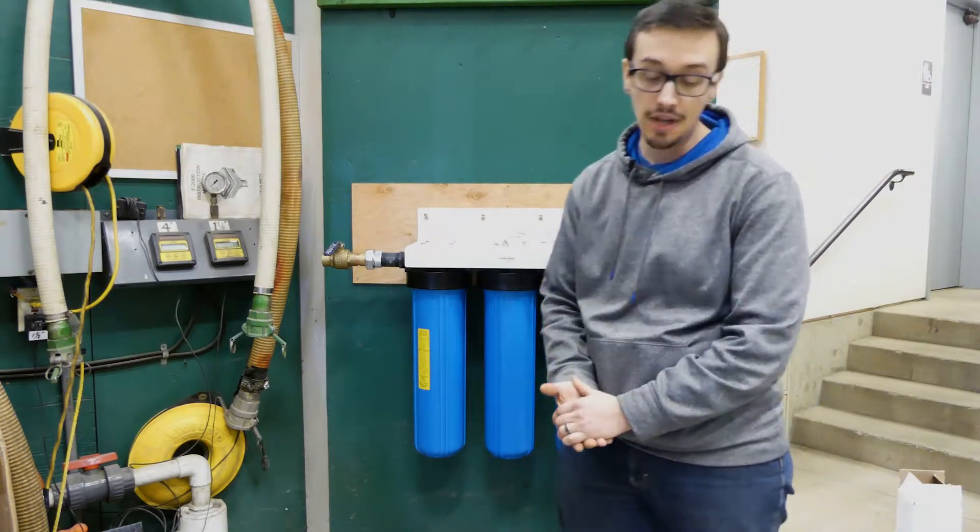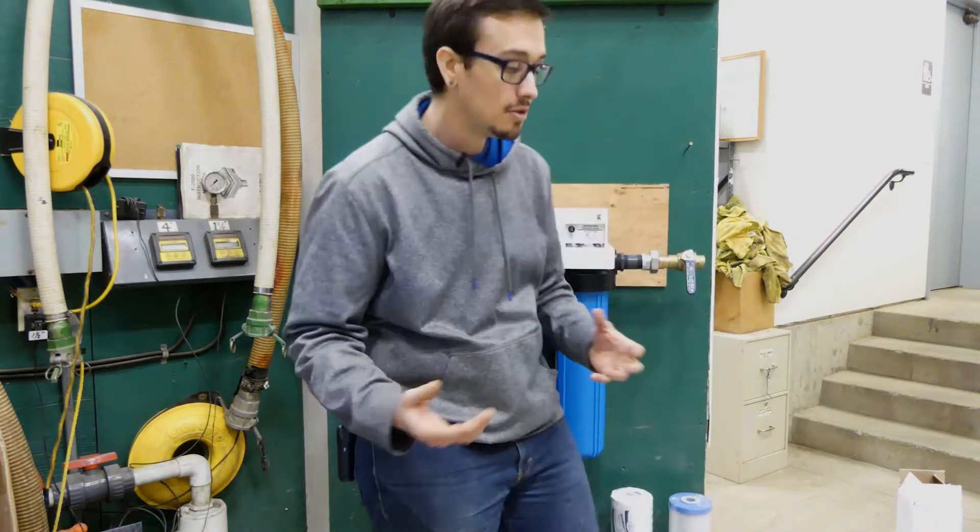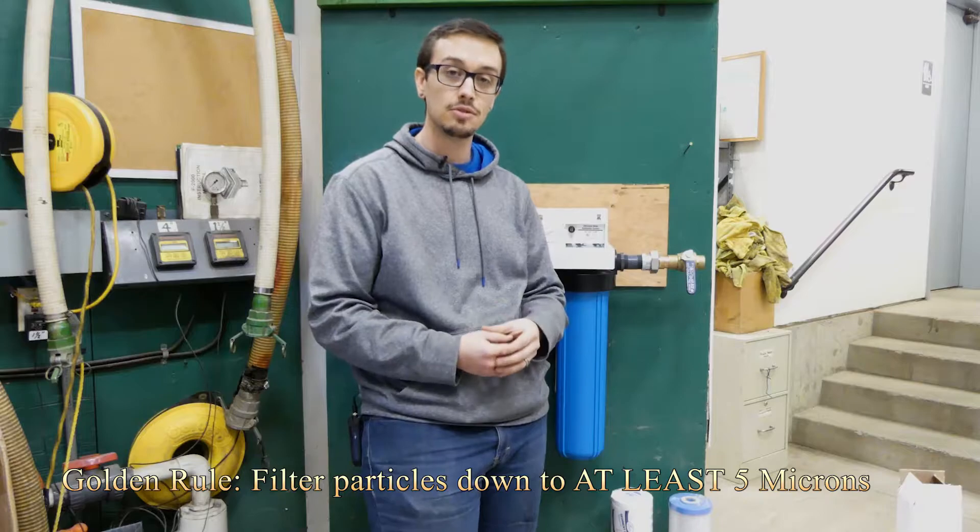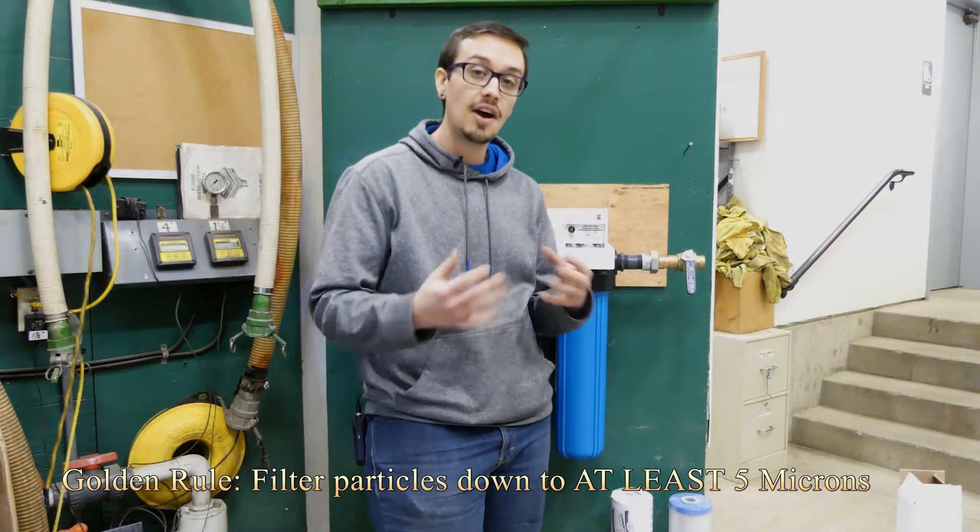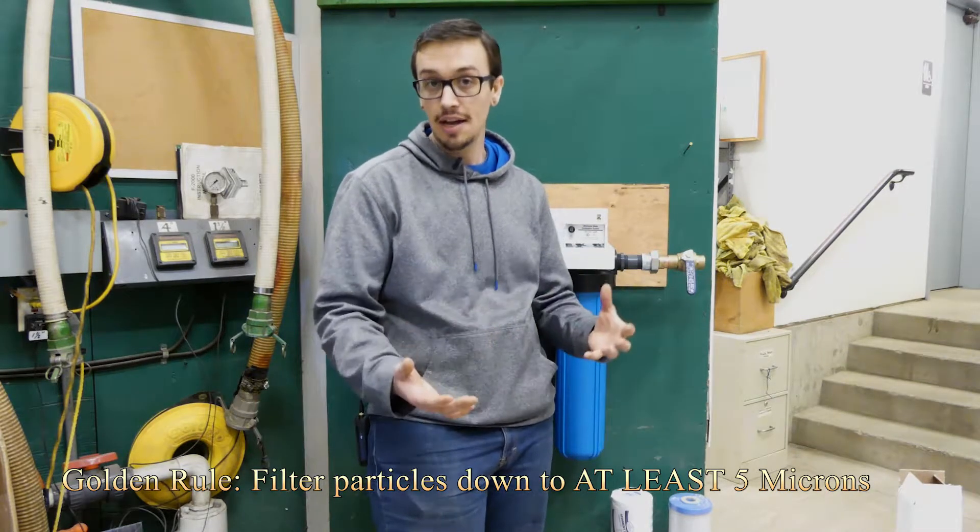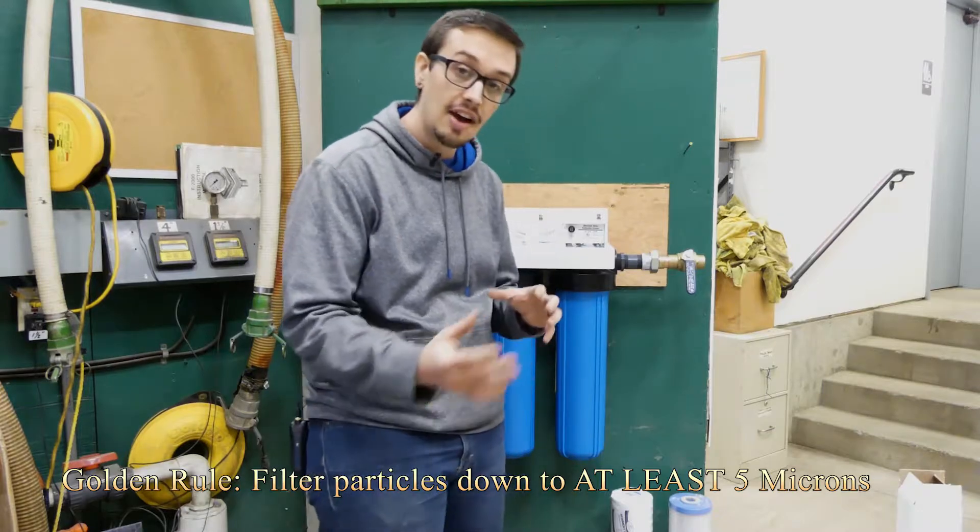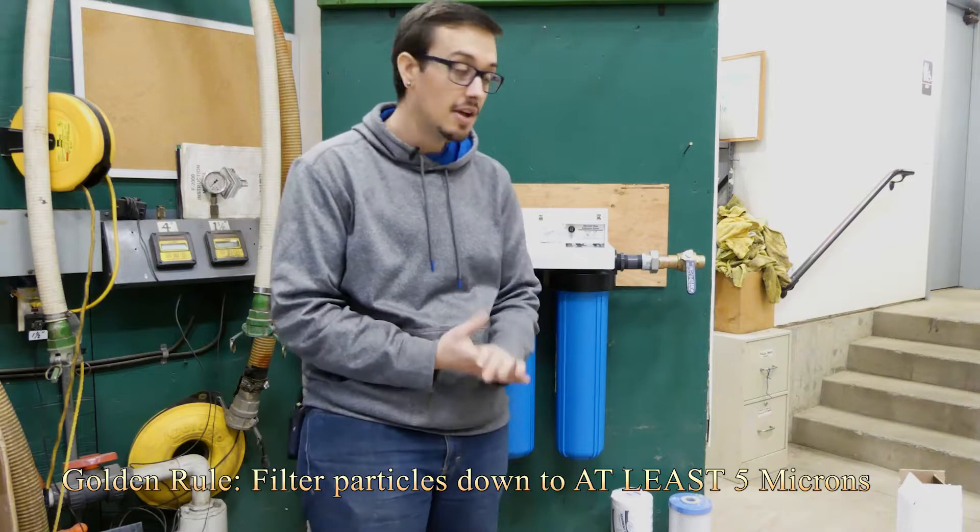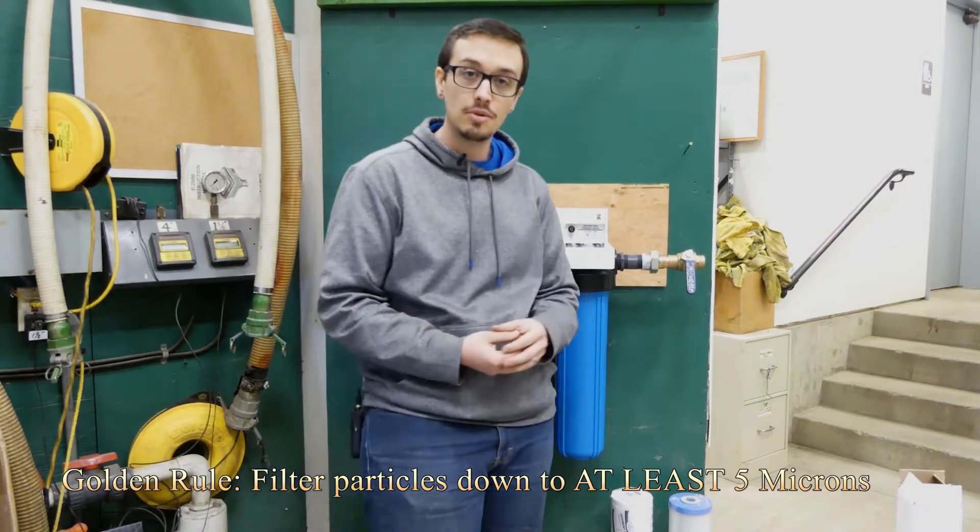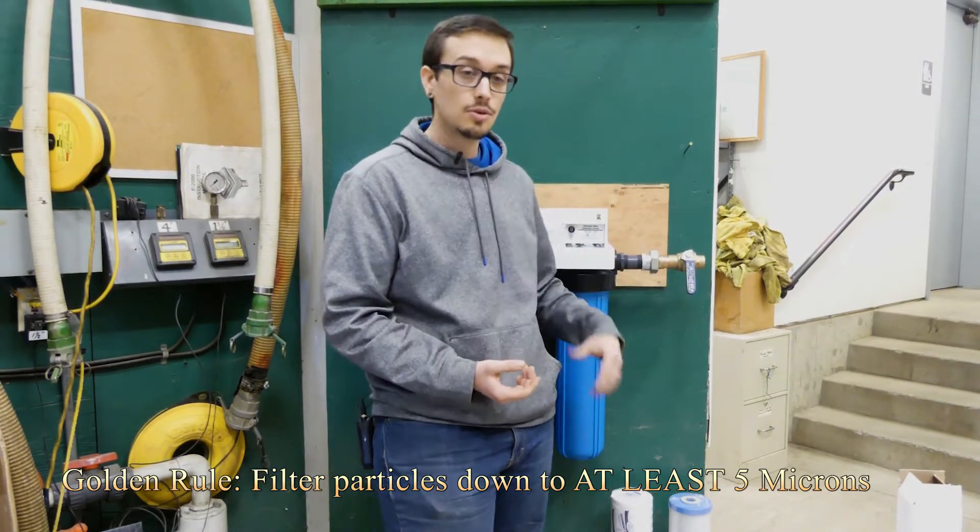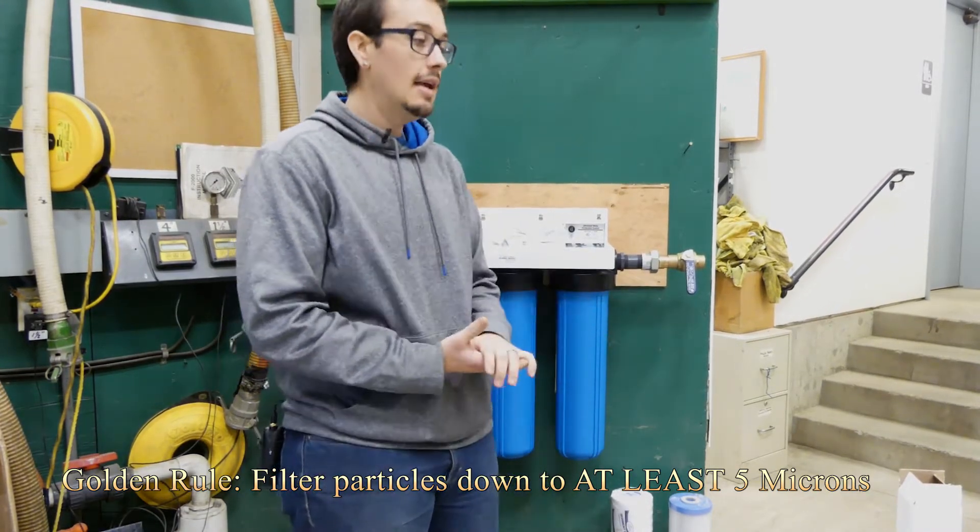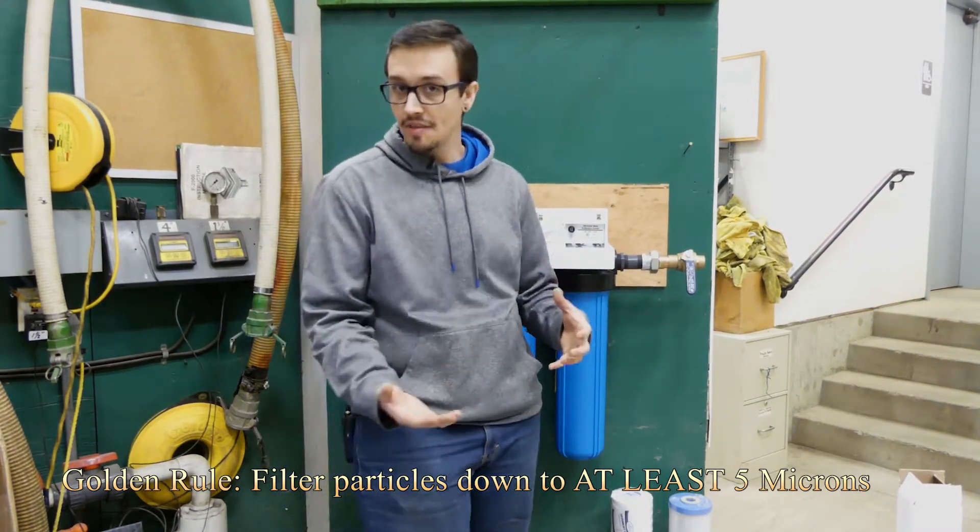There's definitely a golden rule when it comes to UV filter selection and that golden rule is you always want to have at least one of your pre-filters to be a 5 micron filter or tighter. The reason being is that 5 micron filter is going to get the particle size down small enough that the UV light is going to be able to eliminate or sterilize any bacteria or pathogens that are inside of the water.